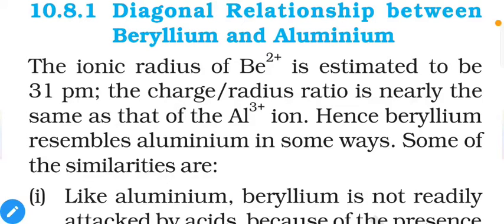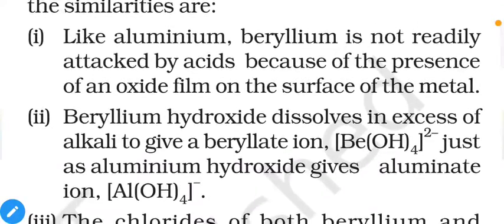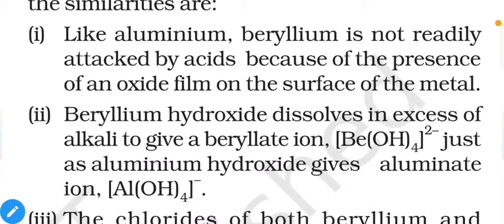Regarding the diagonal relationship between beryllium and aluminium: the ionic radius of Be²⁺ is estimated to be 31 pm, and the charge-to-radius ratio is nearly the same as that of the Al³⁺ ion. Hence beryllium resembles aluminium in some ways. Like aluminium, beryllium is not readily attacked by acids because of the presence of an oxide film on the surface of the metal.